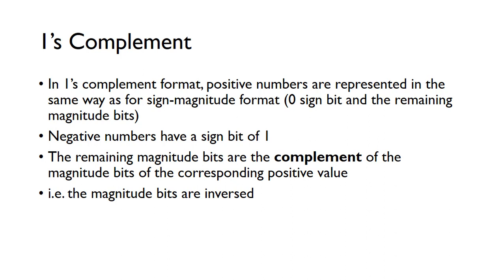Another method is called one's complement. Using one's complement, positive numbers are represented in the same way as for sign-magnitude numbers — a zero sign bit tells us the number is positive, and the remaining bits give the magnitude. For negative numbers, the sign bit is 1, and the remaining magnitude bits are given by the complement of the magnitude bits of the corresponding positive value.